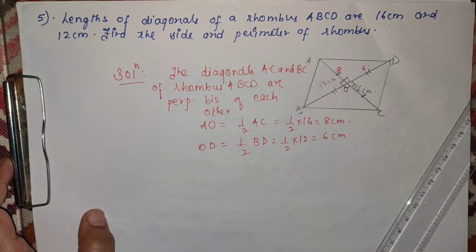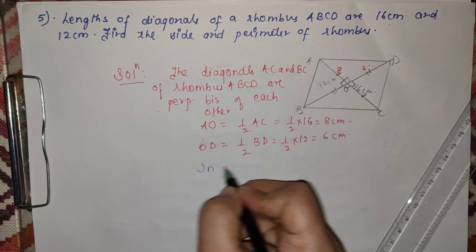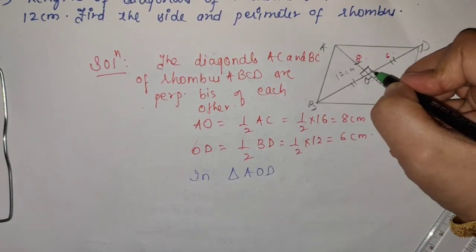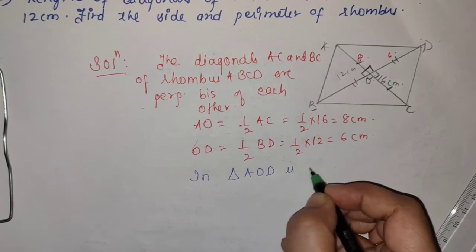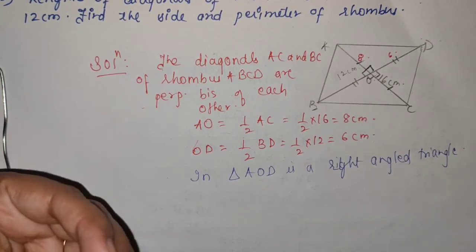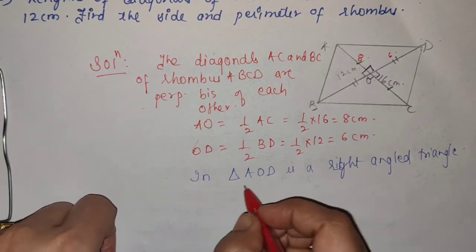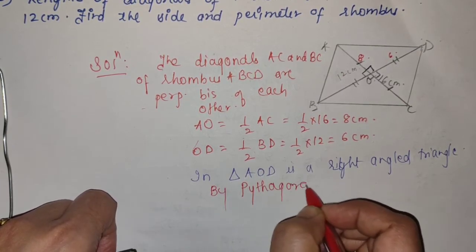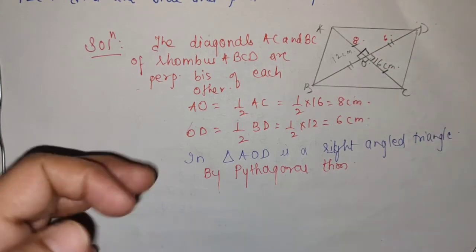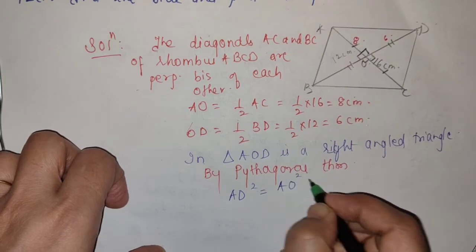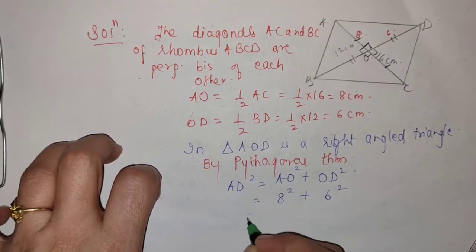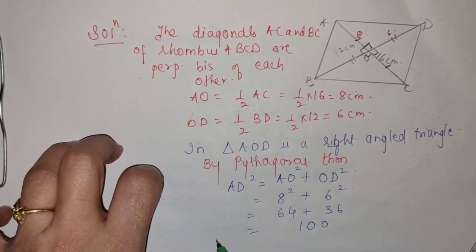Now concentrate on triangle AOD — यह 90 degree है, इसका मतलब यह right angle triangle है। तो जैसे right angle आता है immediately Pythagoras theorem click होता है। Hypotenuse कौन सी है? — जो side 90 degree को opposite हो — so AD square = AO square + OD square. Substitute: 8² + 6² = 64 + 36 = 100. Therefore AD = 10.